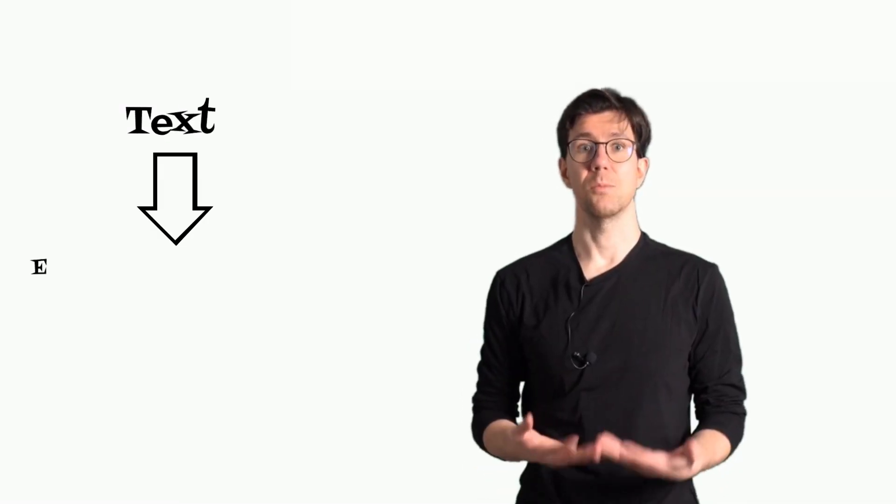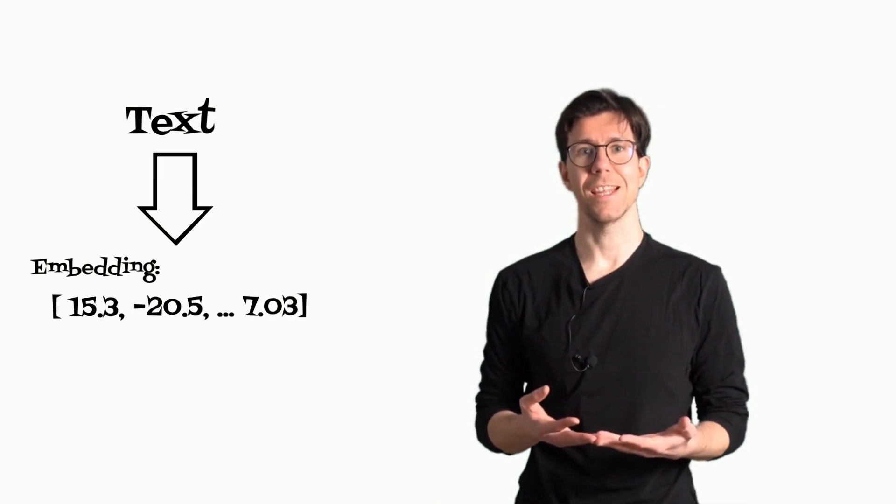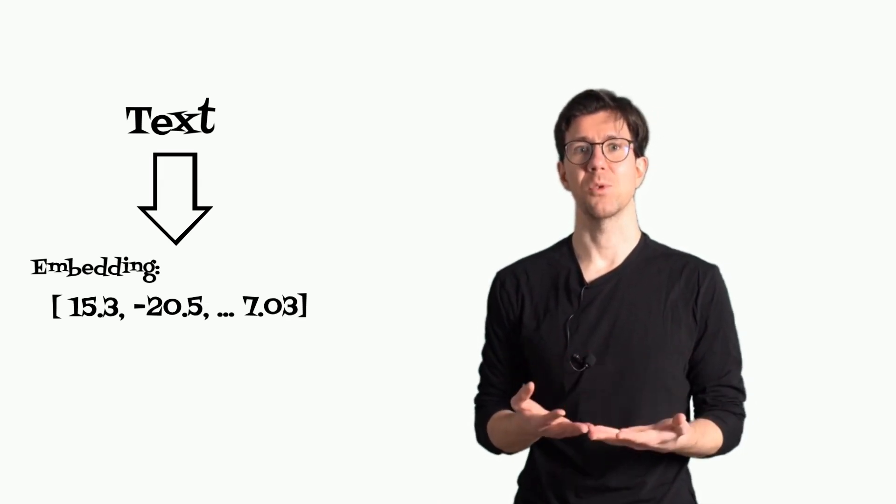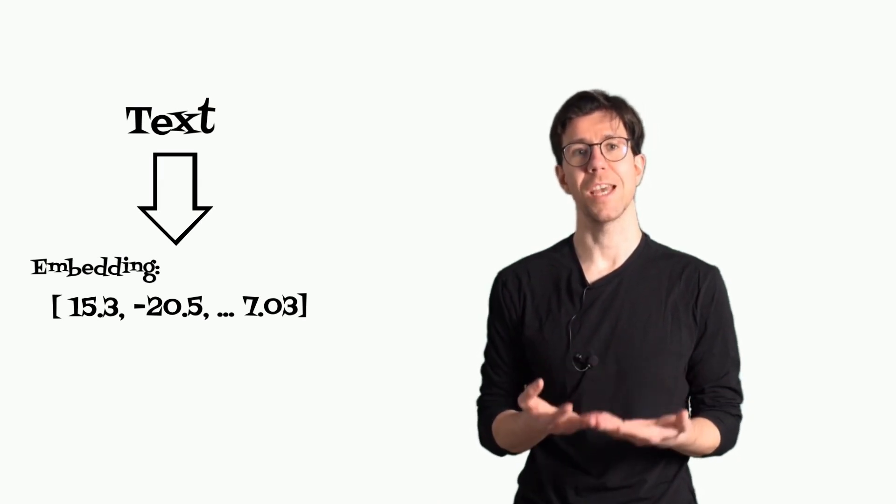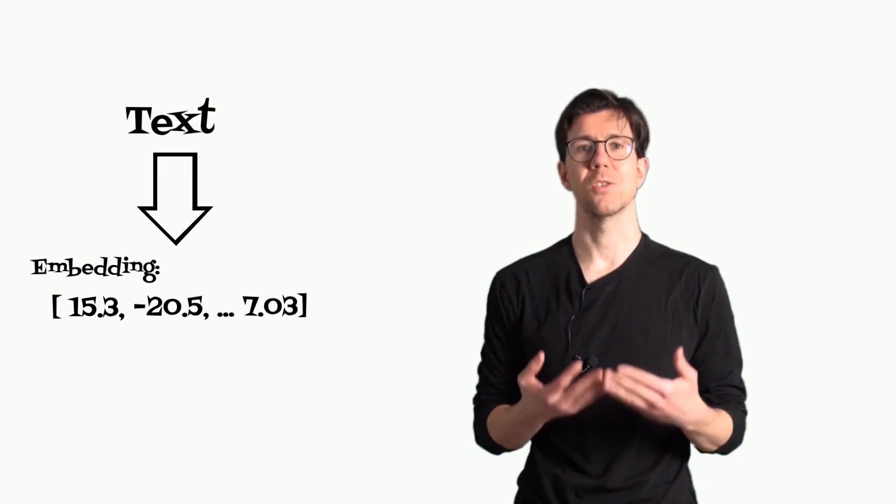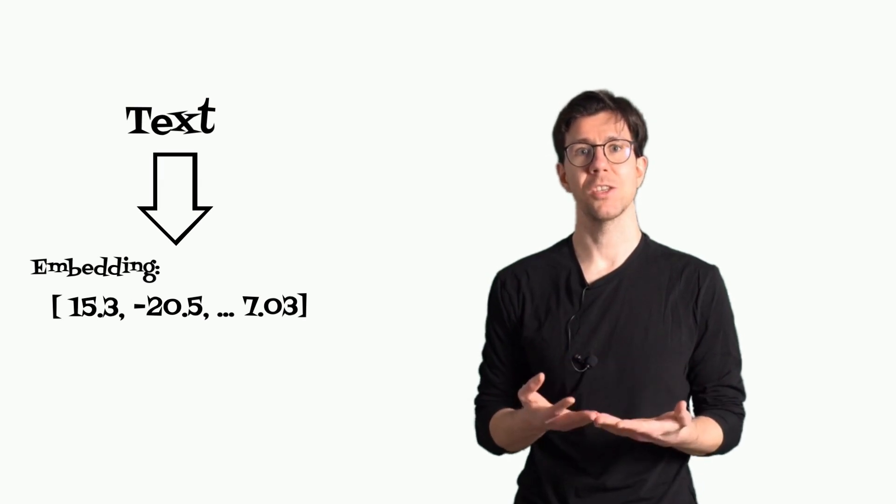Text embeddings are multidimensional vectors that represent textual data. These vectors capture semantic and syntactic features of text, allowing machines to process and understand human language.